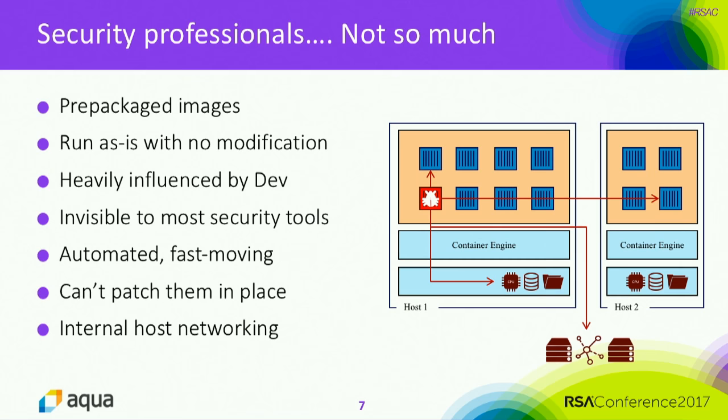The image needs to run as-is. When the image gets instantiated into a container, the file system is used as-is by the process the container engine runs — you can't modify it, and you also can't patch it in place. All the things that go into a container are heavily influenced by developers. We need to trust developers to put stuff we don't know into a format we're not familiar with, and then have it run on a server.